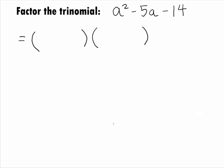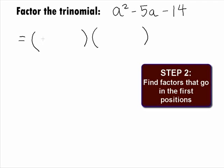In Step 2, we want to find the factors that go in the first positions. When you multiply the first positions out, we get the first term of the trinomial, which in this case is a squared. So, the first terms of the factors will each be a.